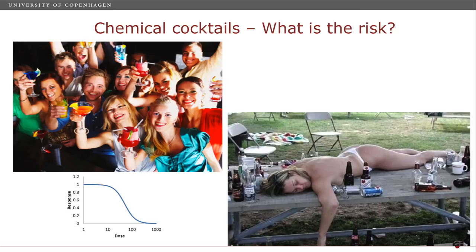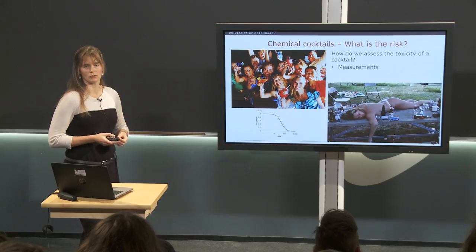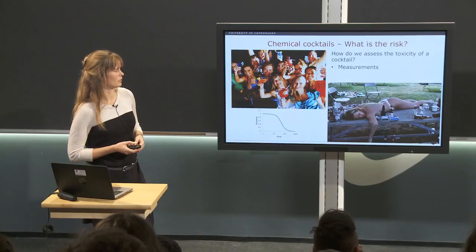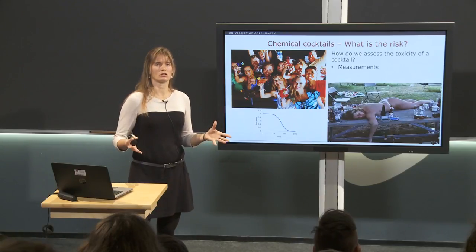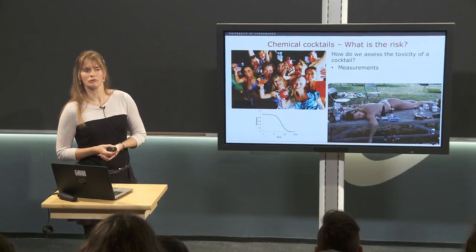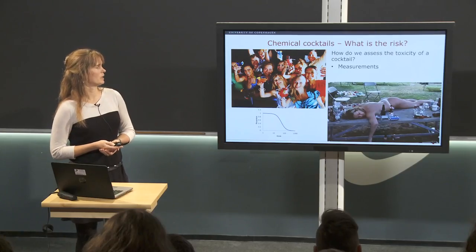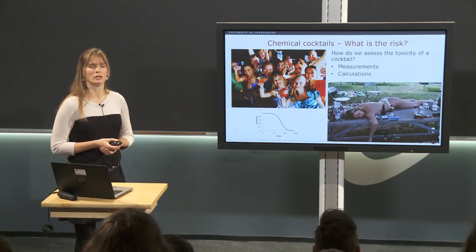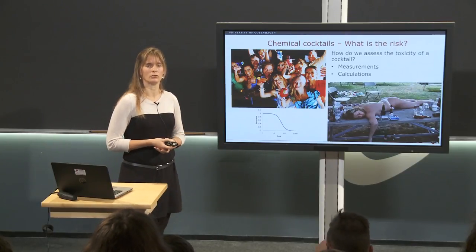So how do we predict these effects? Could this girl actually have predicted where she ended up if she had calculated a bit? One way of doing it is measuring — you simply measure the toxicity of your cocktail — but considering the amount of different chemical cocktails that can be made from all the chemicals we surround ourselves with, that is just an impossible task. So therefore we need to do calculations.